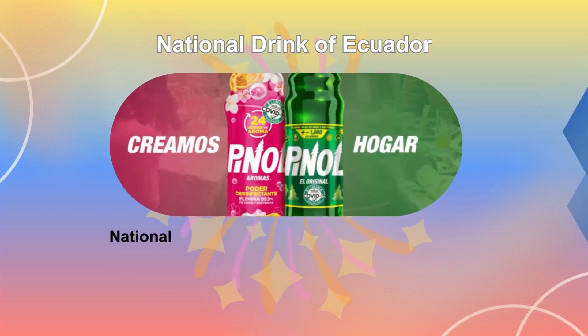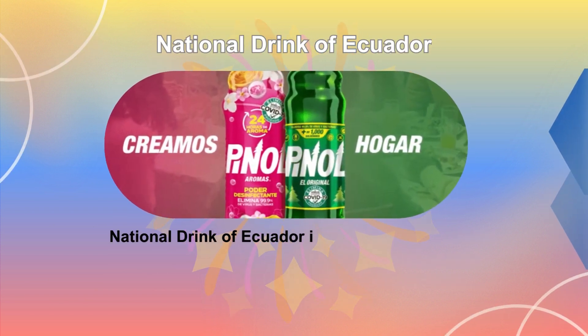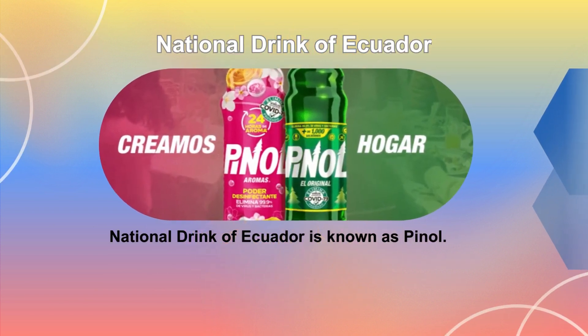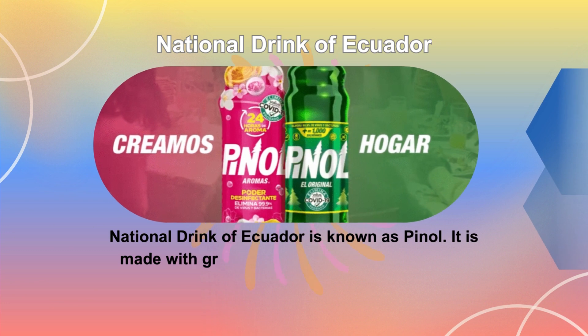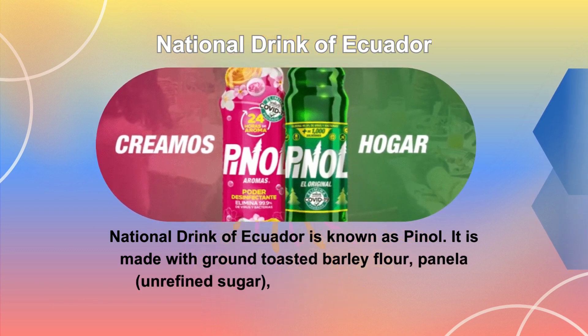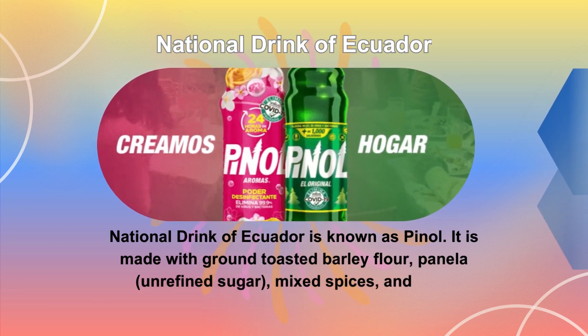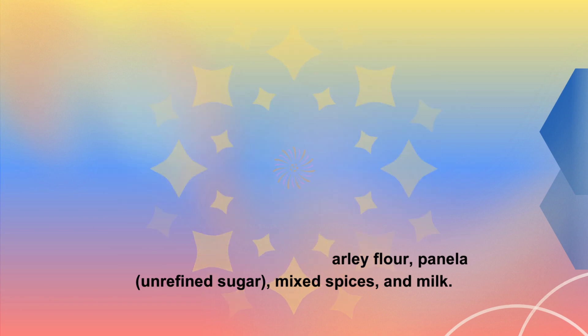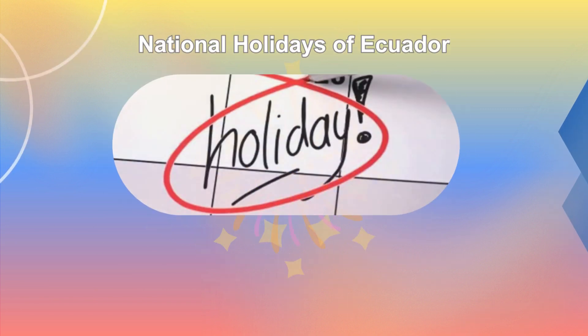The national drink of Ecuador is known as pinol. It is made with ground toasted barley flour, panela, unrefined sugar, mixed spices, and milk.